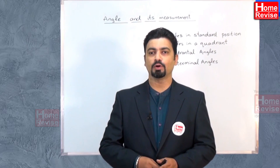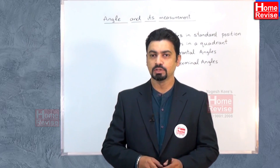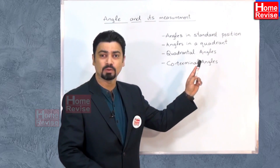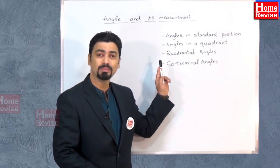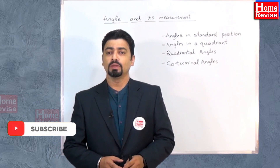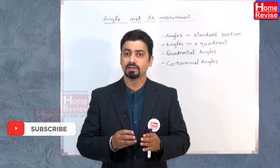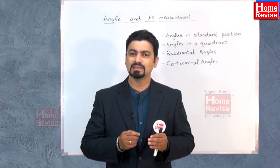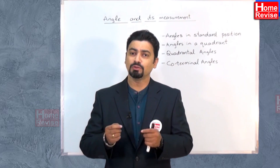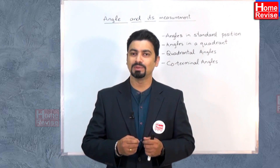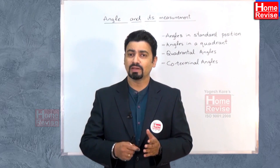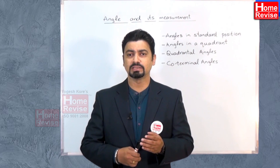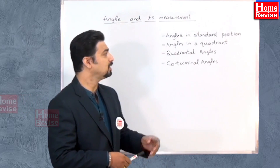Hello students, let us continue with the chapter of angles and its measurements. Today we are going to see angles in standard position, angles in a quadrant, quadrantal angles, and what we mean by co-terminal angles. We have seen that directed angles are an ordered pair of rays OA and OB such that the vertex is at the origin. The initial arm is rotated to the terminal arm position. A directed angle taken in anti-clockwise direction is positive, and in clockwise direction is negative.